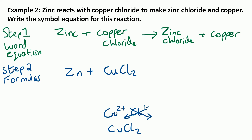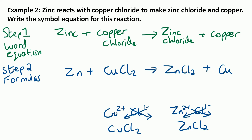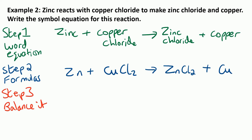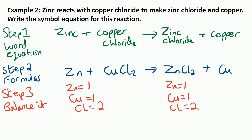Zinc chloride — cross over the numbers and you get ZnCl₂. And copper on its own is just Cu. So that gets you the first mark in the exam. Then we need to balance the equation. We've got one Zn on each side, one Cu on each side, and two Cls on each side. So this one is actually already balanced. Sometimes they do just work out balanced already, so you don't need to start messing about with them. That would get you two marks again in an exam.